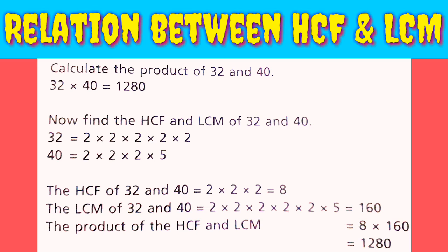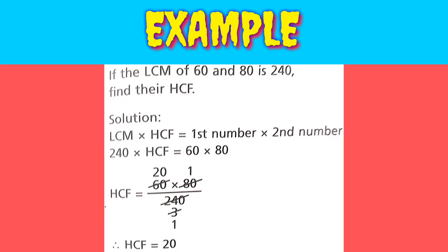Here is another example. If the LCM of 60 and 80 is 240, find their HCF. We use the formula: LCM multiplied by HCF is equal to the first number multiplied by the second number.